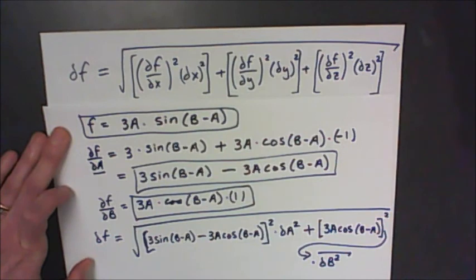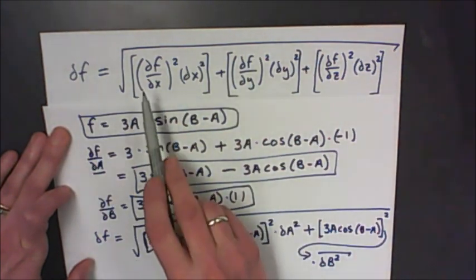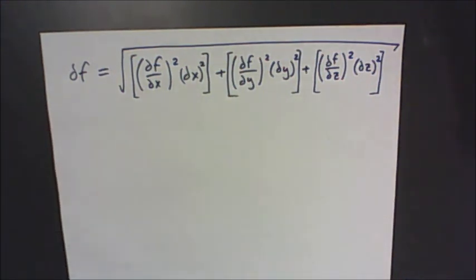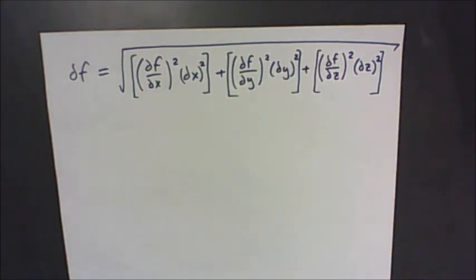So it's a more complicated expression, but we're still just using the same prescription — we have two terms under the square root. The nice thing about using this calculus method is it's always the same expression, and you can apply it to any function with any number of variables. If you're still having trouble with this, do contact your lab instructor — we're happy to give you some one-on-one time to figure this out.